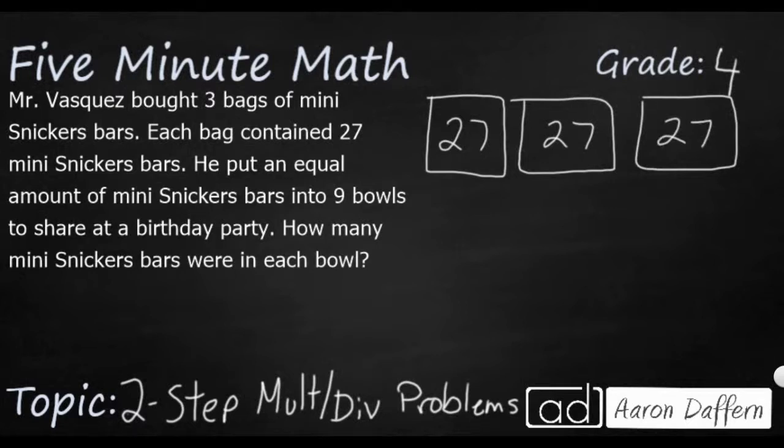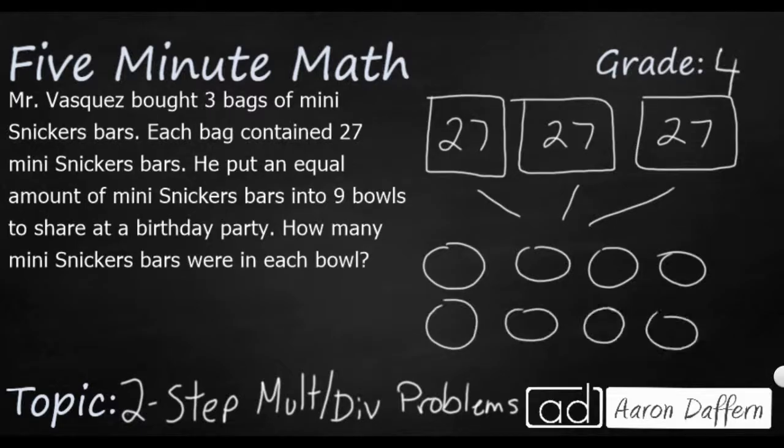And he's going to put an equal amount of mini Snickers bars into nine bowls to share at a birthday party. So he's going to take these three, and he's going to split them into—I'll just draw nine bowls here. We've got an extra one right there. There's your nine bowls. How can we split that evenly?